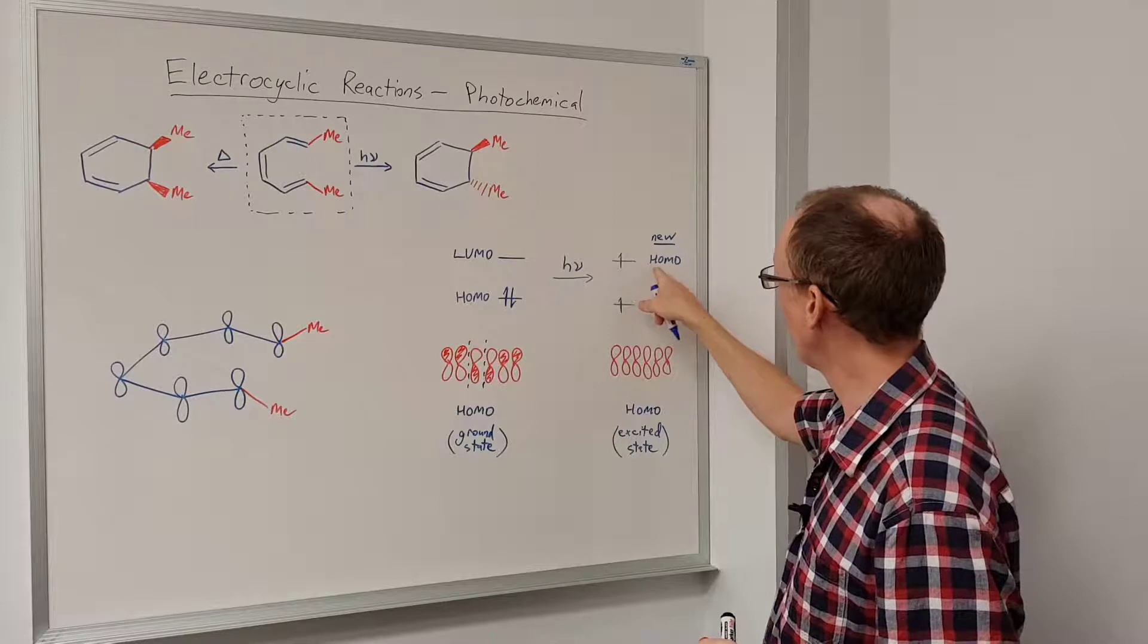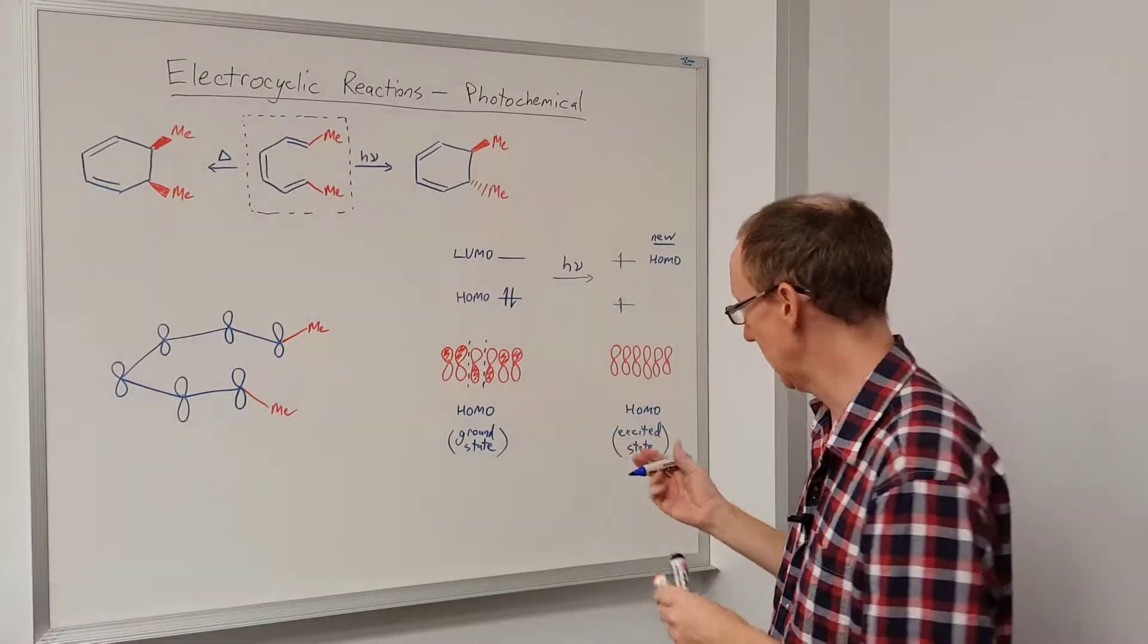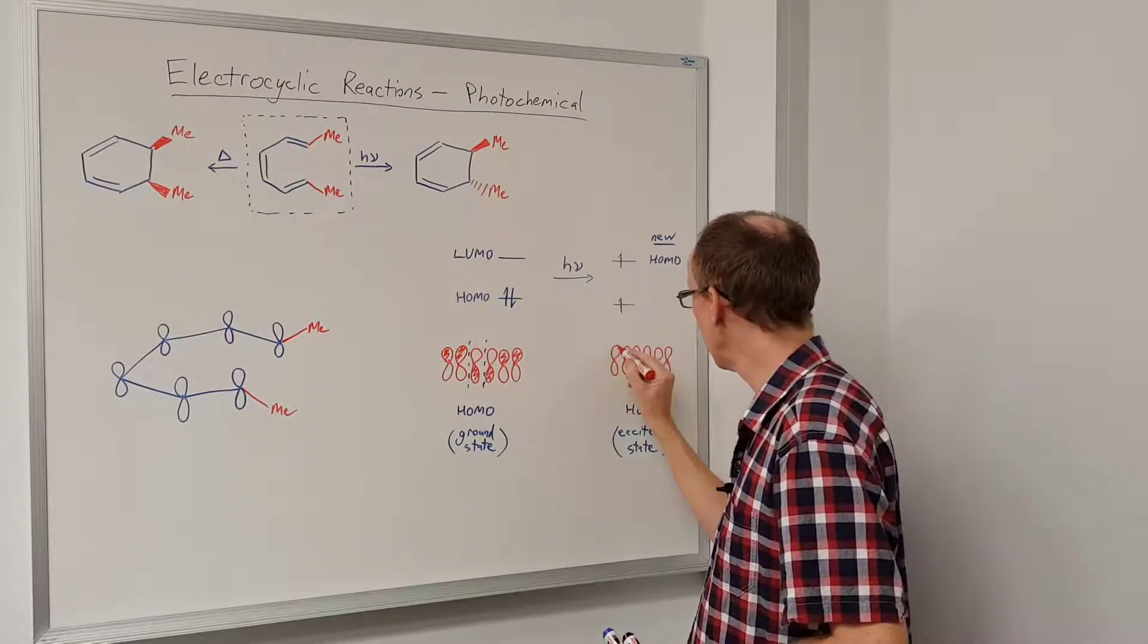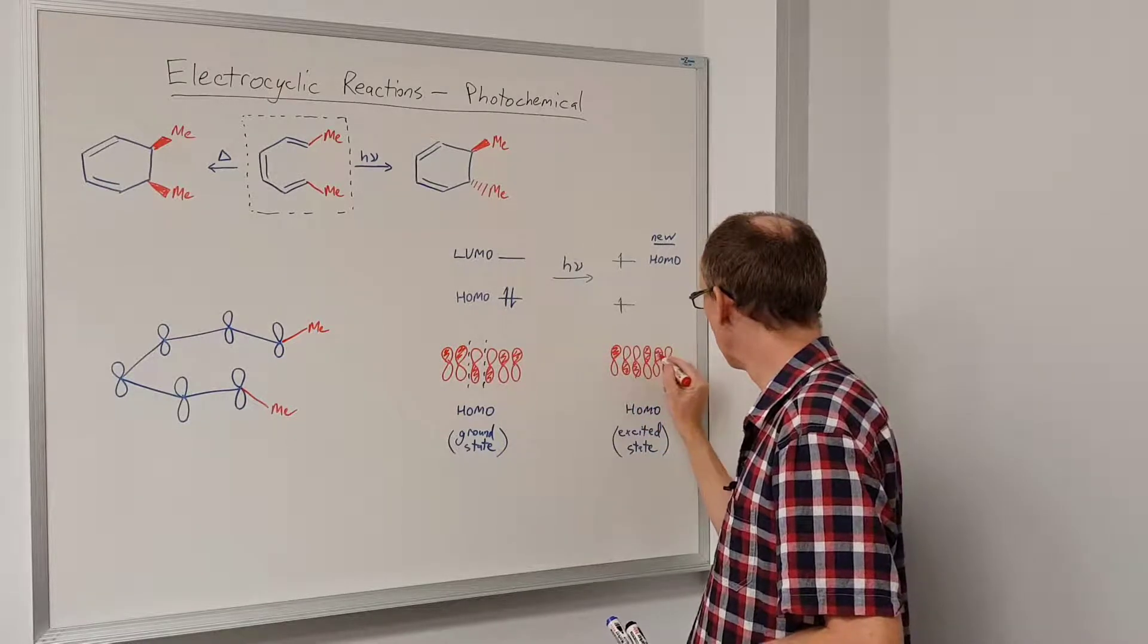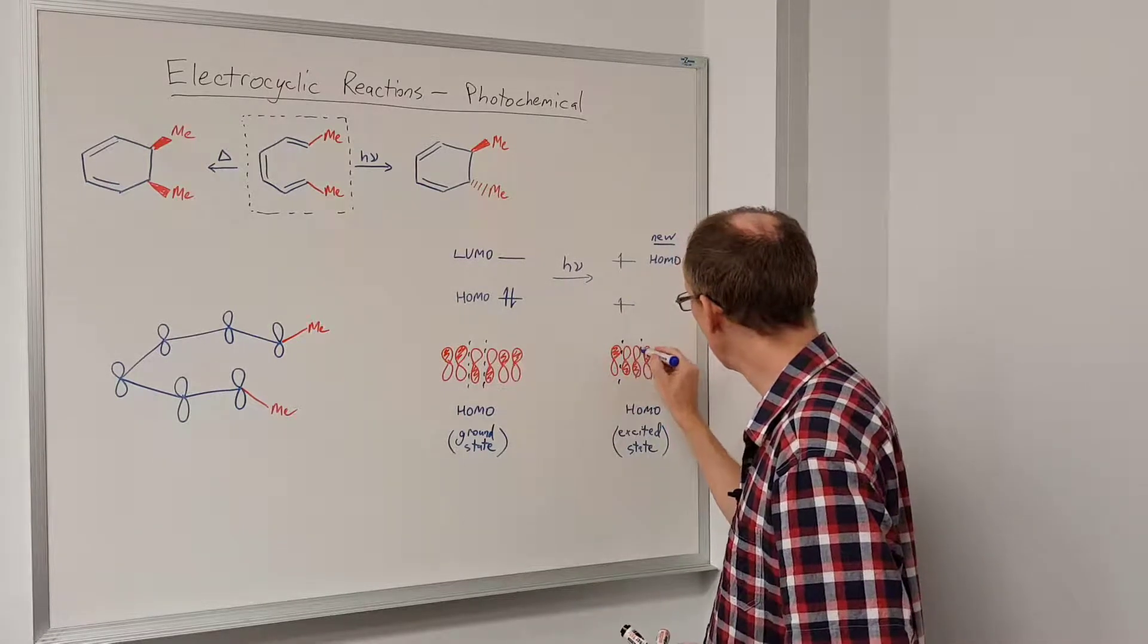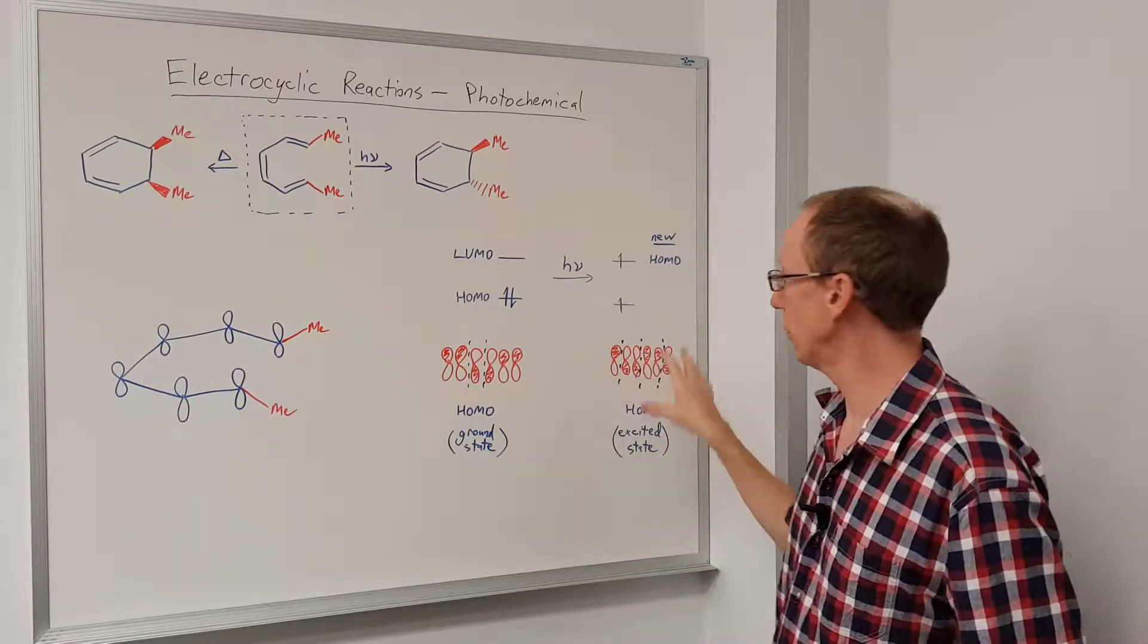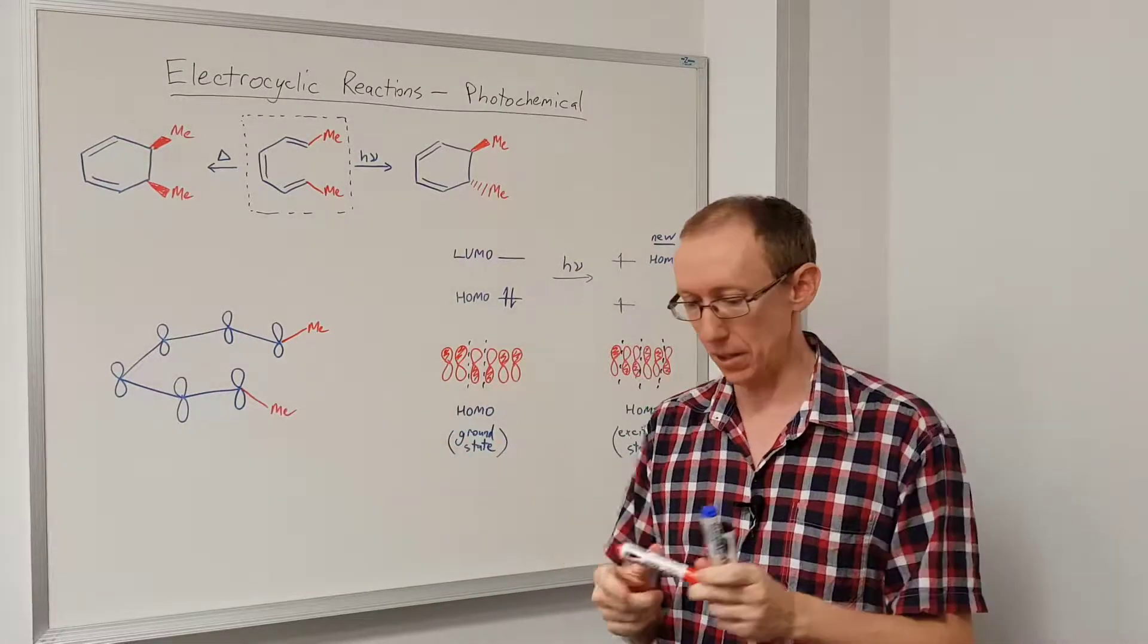However, in the excited state, we're now talking about an orbital that was the LUMO. So this had a different symmetry. It had this arrangement here, where we had three nodes. So we had a node here, there, and there. And so that's going to change our arrangement of orbitals when we look at how the two ends are going to come together.